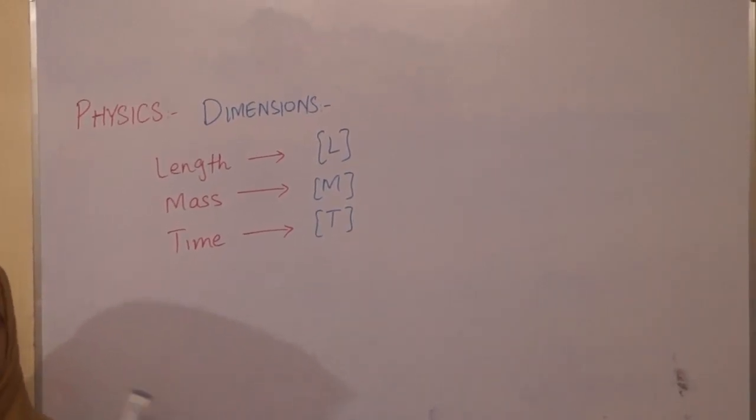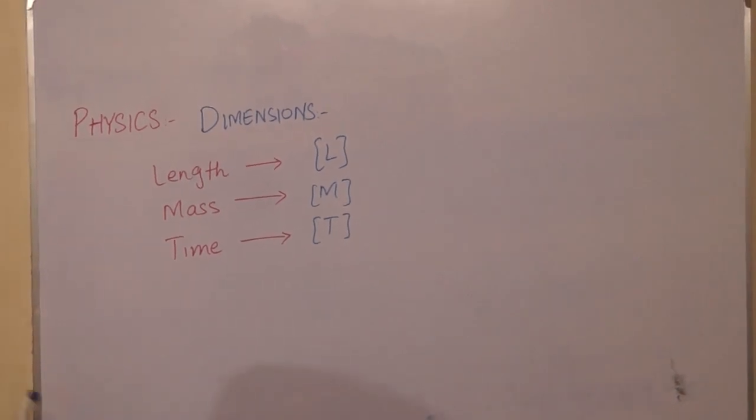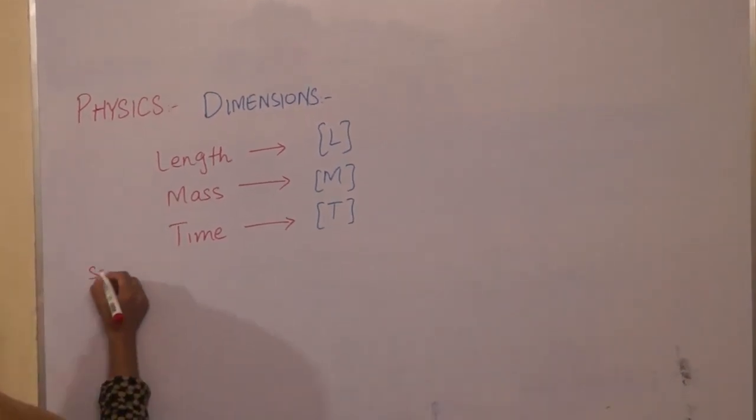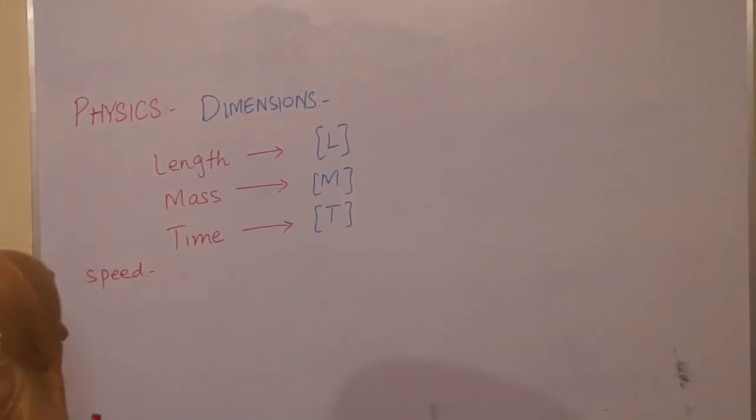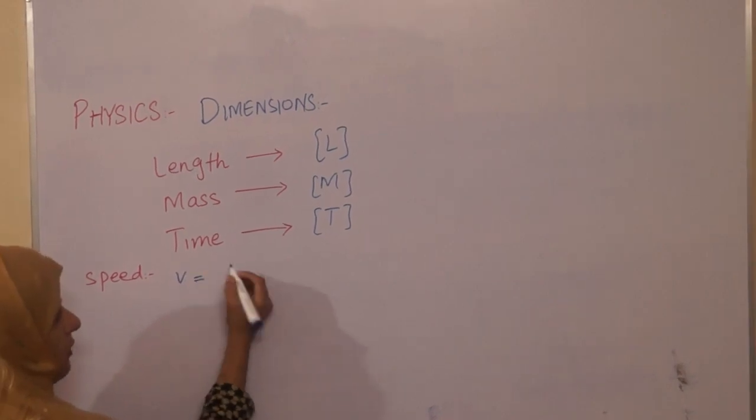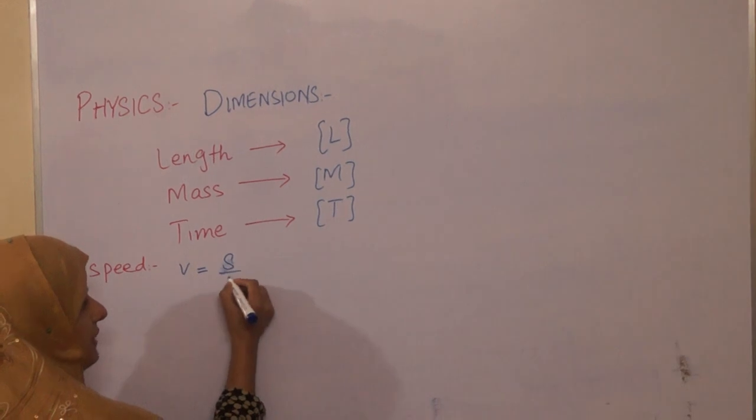Let us derive the dimensions for different terms. For example, let's take speed. Speed is denoted by v and its formula is distance divided by time.